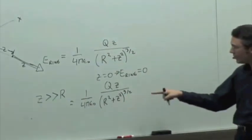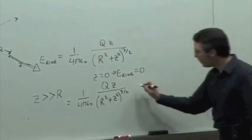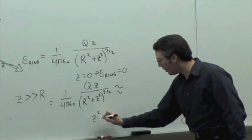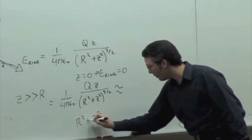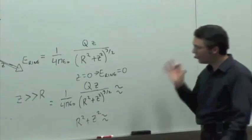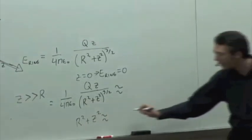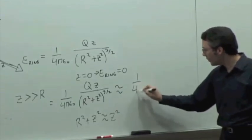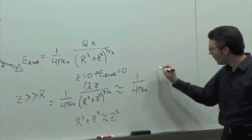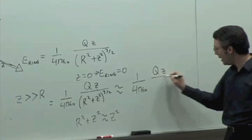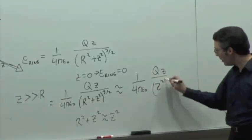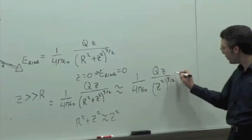So let's look at the denominator. If z is much, much bigger than r, then r squared plus z squared is just approximately equal to z squared, okay? So what's that going to leave us in the denominator? We have 1 over 4 pi epsilon 0, q times z over z squared to the 3 halves power.